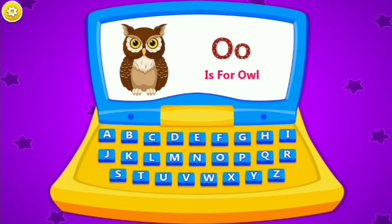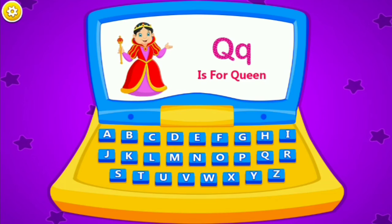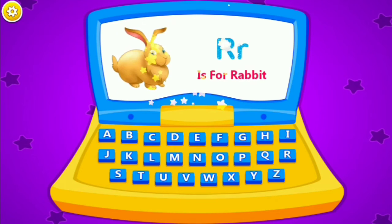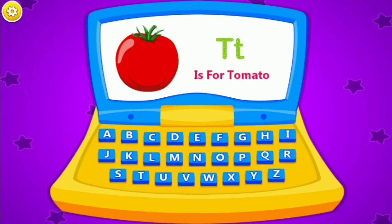...owl. P is for pear. Q is for queen. R is for rabbit. S is for snake. T is for...